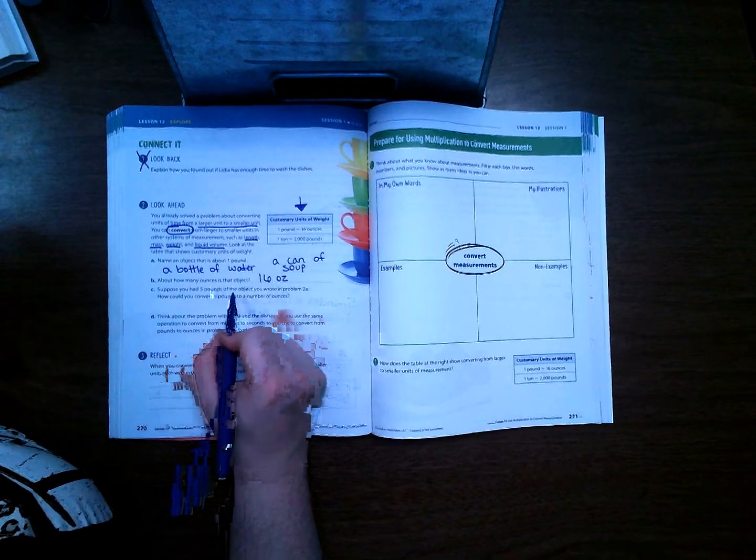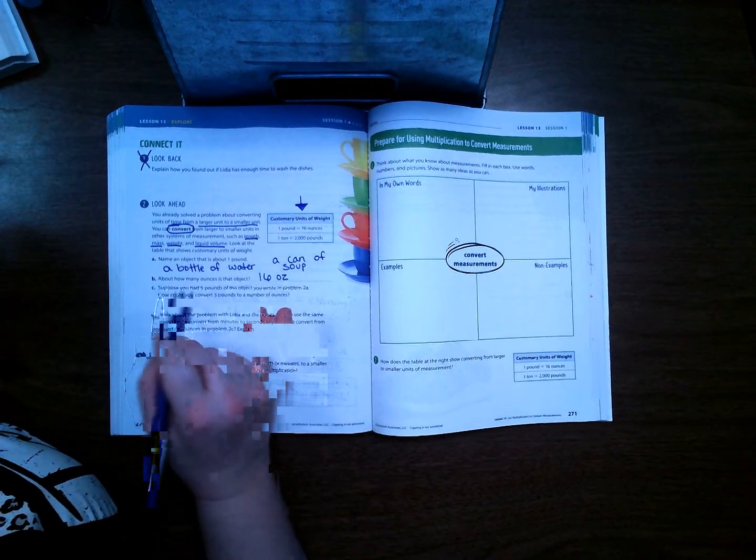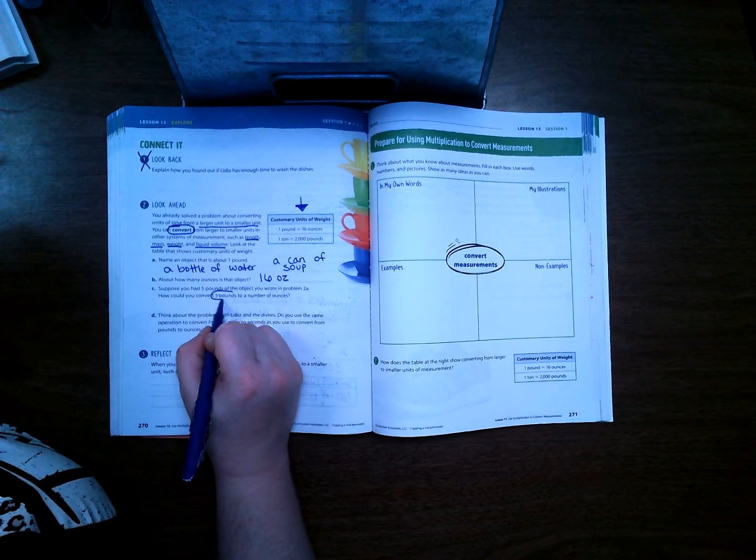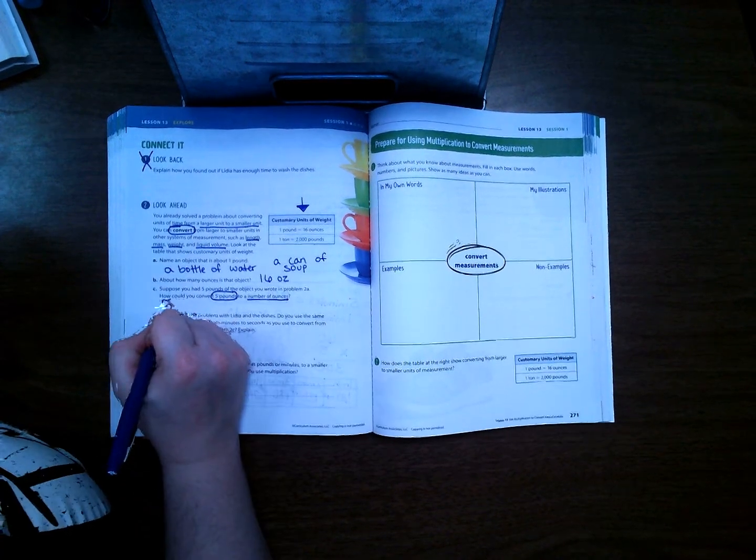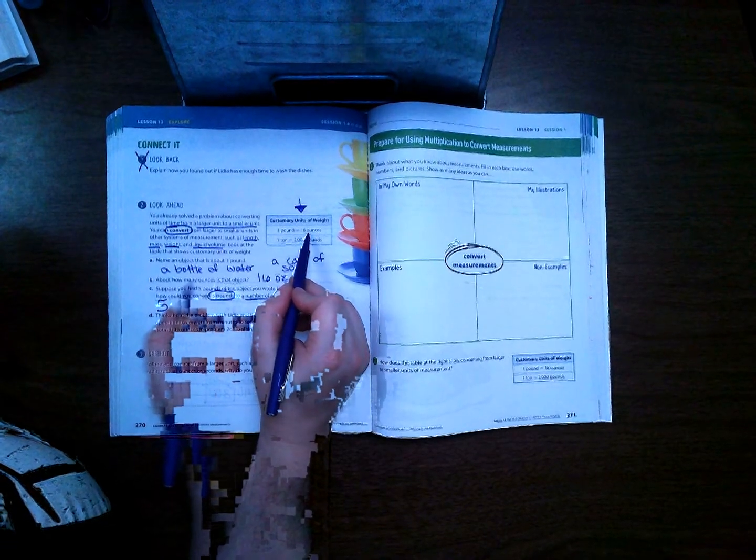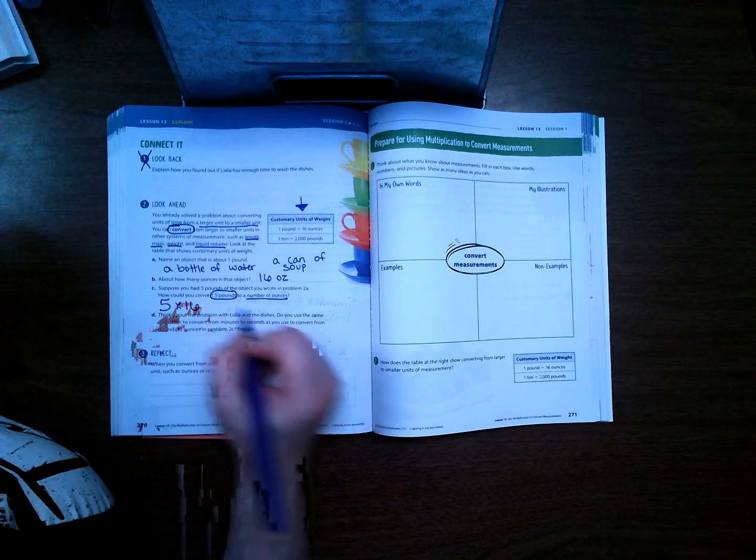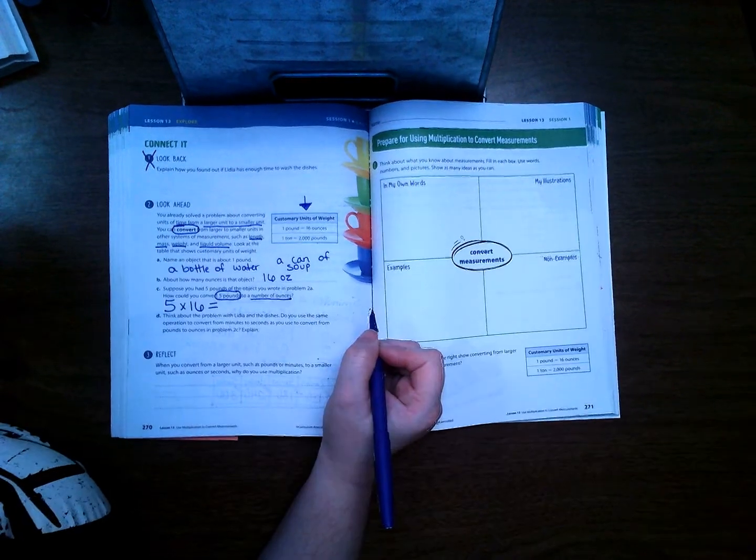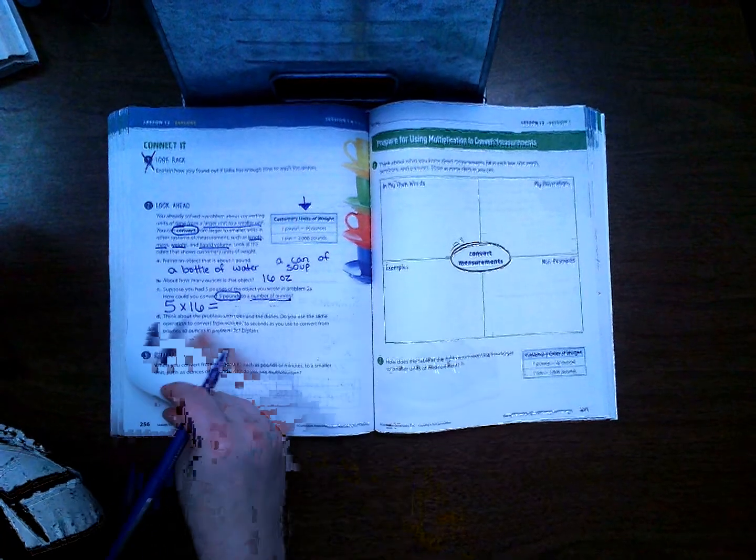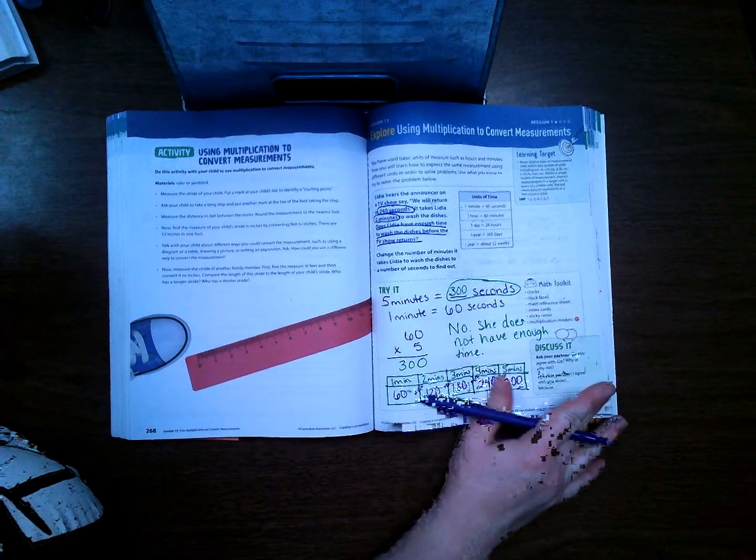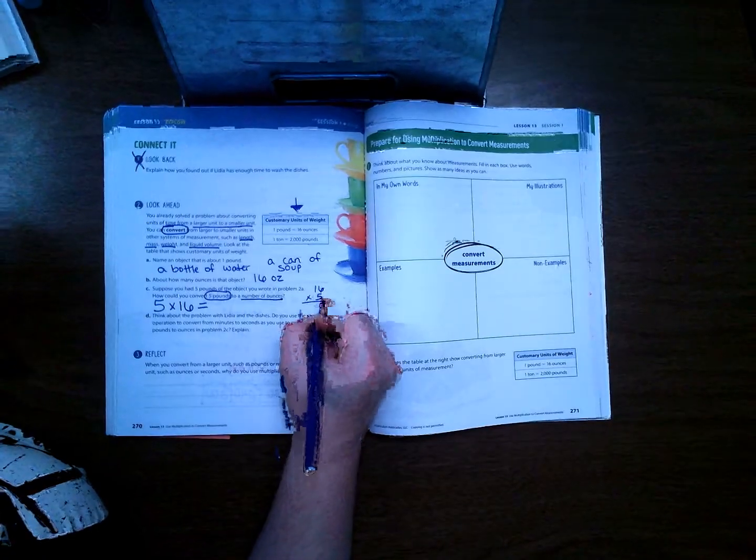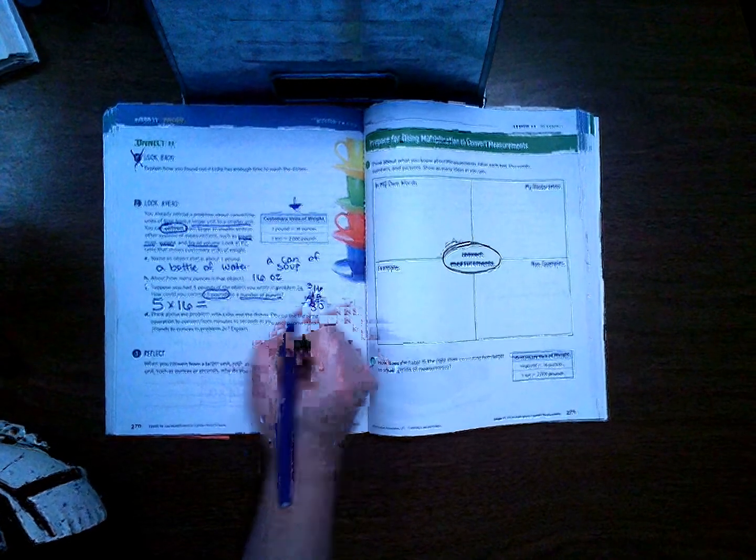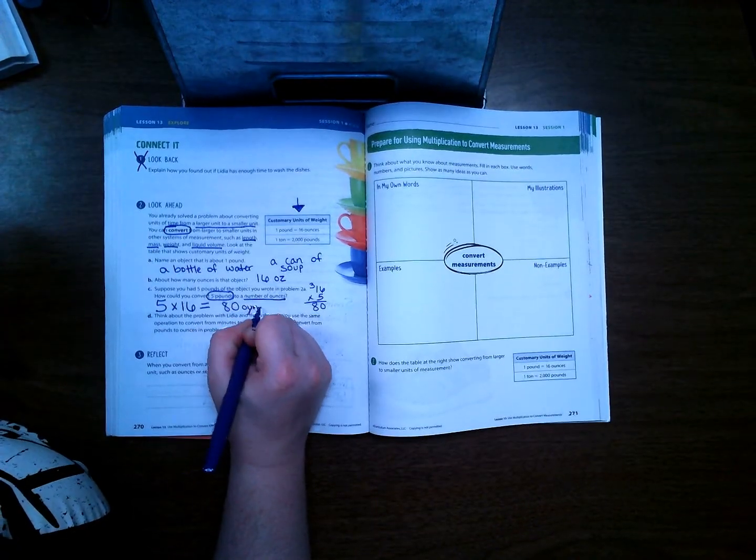Suppose you had five pounds of the object you wrote in problem 2a. How could you convert five pounds to a number of ounces? Well, if I went five and I know there is 16 in one, I'm going to multiply it by 16. Like that, or again we could use another table like what we did on the previous page, but we would add 16 each time. So 16 times 5, 5 times 6 is 30, 5 times 1 is 5, 6, 7, 8, so it would equal about 80 ounces.